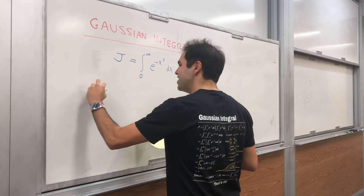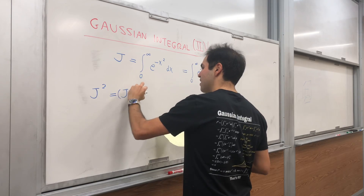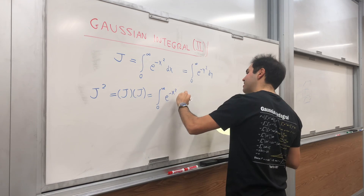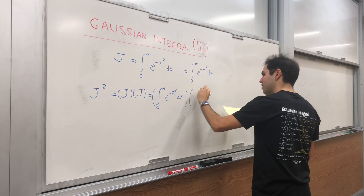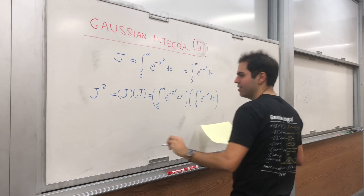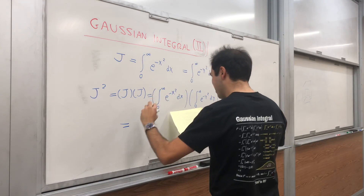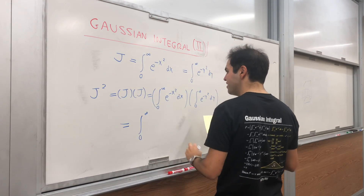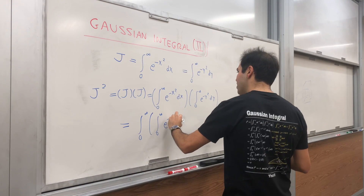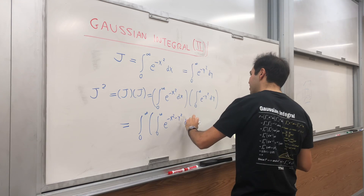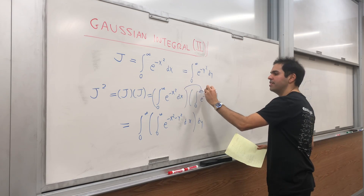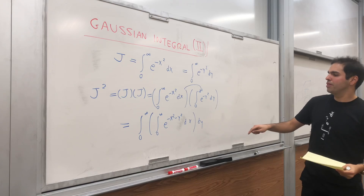Now let's do the trick of writing J squared as J times J: the integral from 0 to infinity of e to the negative x squared dx, times the integral from 0 to infinity of e to the negative y squared dy. By the Fubini trick, this equals the double integral from 0 to infinity of e to the negative x squared minus y squared dx dy.